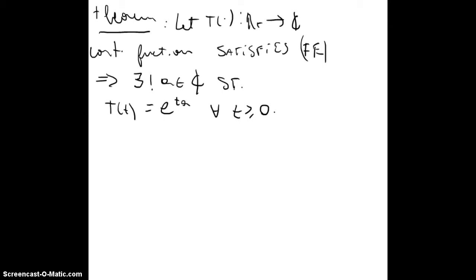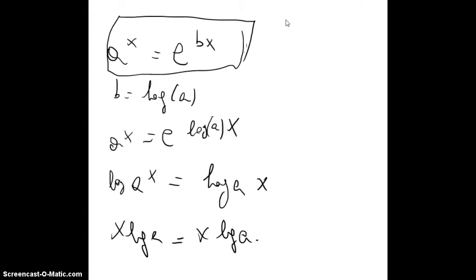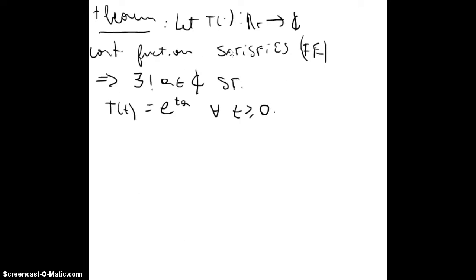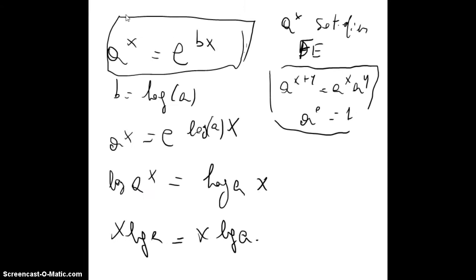One can say that the function a(x) satisfies the functional equation — that means a(x+y) equals a(x)·a(y), and a(0) equals 1. And we said that if it satisfies this, then there is a unique a such that it is e^(ta). So it's important to say that we can write a(x) as equal to e^(bx), with b equal to log(a), just using the properties of logarithms.